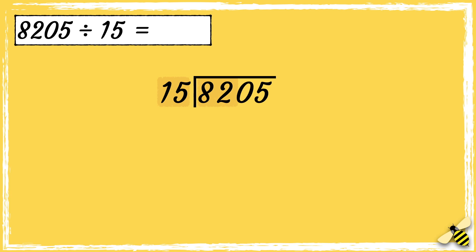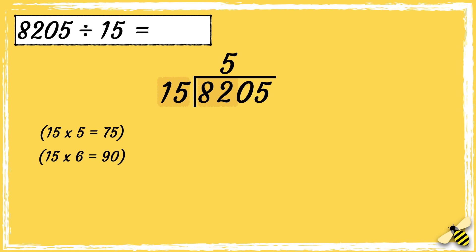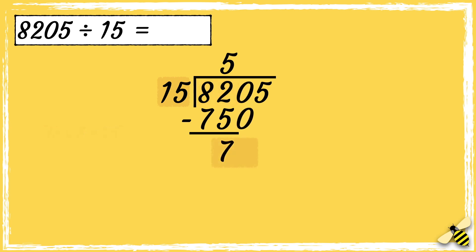So we need to look at how many 15s go into 82. 15 times 5 is 75, and 15 times 6 is 90, which is too high. So I can see that 15 goes into 82 five times. Now we can find out what's left over: 82 take away 75 equals 7. We can now bring the next digit down.